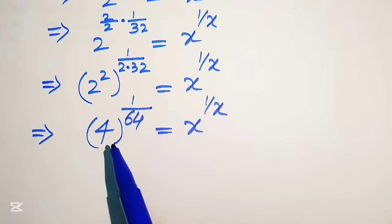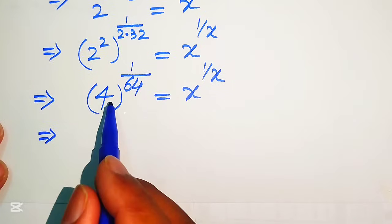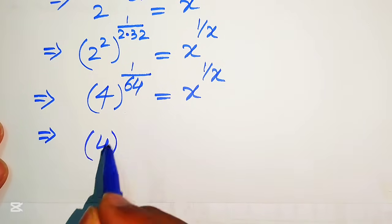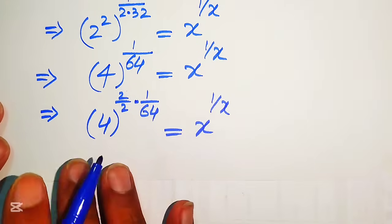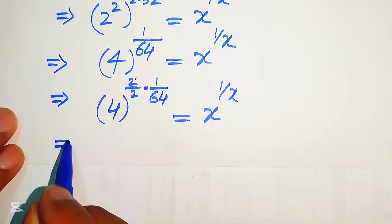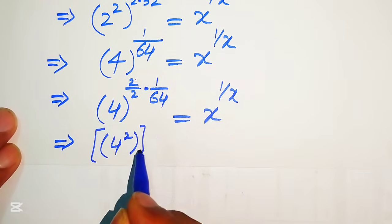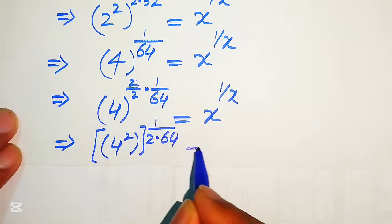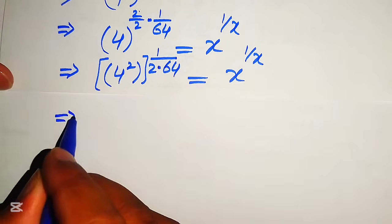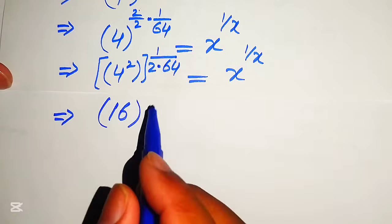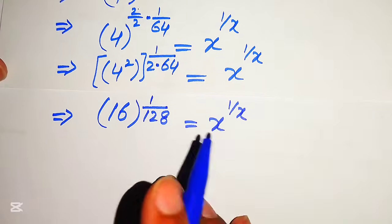It will be written as 4 to the power of 2 over 2 multiplied by 1 over 64, equals x to the power of 1 over x. We move this 2 inside the term, multiplying it with 64: giving 4 squared to the power of 1 over 128 equals x to the power of 1 over x. Now 4 squared equals 16, and the exponent is 1 over 128, so 16 to the power of 1 over 128 equals x to the power of 1 over x.